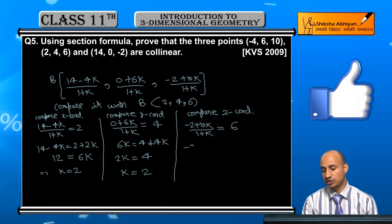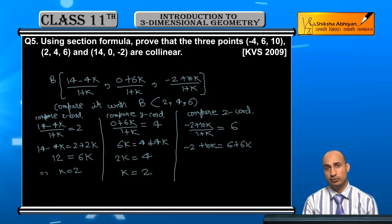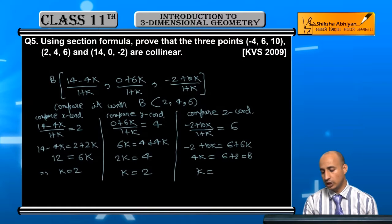This will be (-2 + 10k)/(1 + k) is equal to 6. That means -2 + 10k is equal to 6 + 6k. Now I take 6k to the left, 10k minus 6k is 4k. And here 6 plus 2 is equal to 8. So here also k is equal to 2.